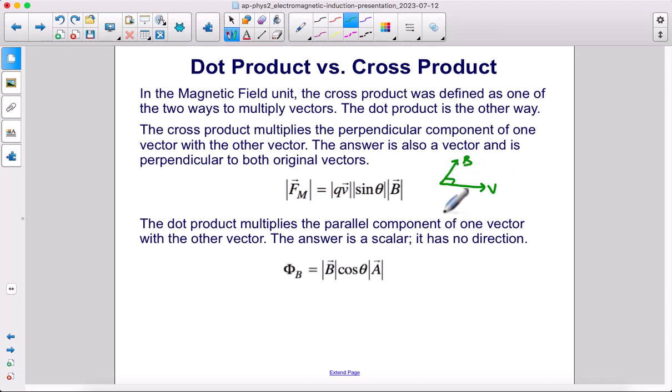So if we had velocity this way, and we had a field going that way, and this was a 90 degree angle, then we would end up with a force, either up or down, depending on what the charge of the particle was. And these were all perpendicular to each other, and that was how we did the cross product.